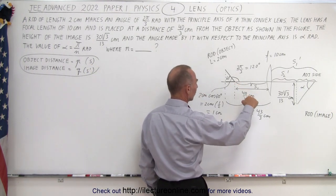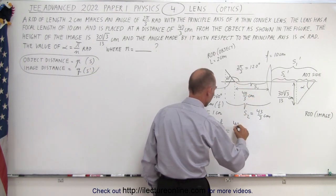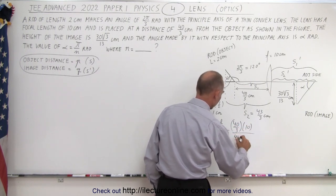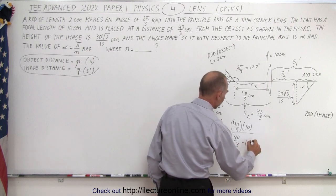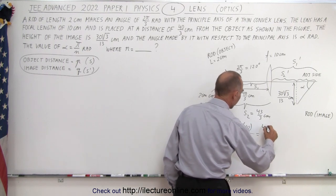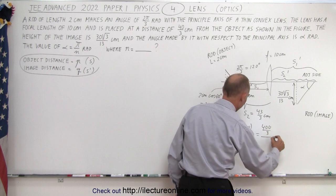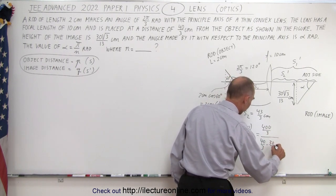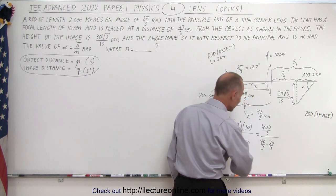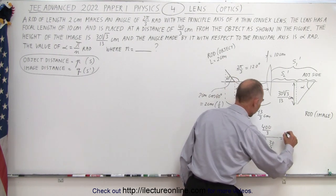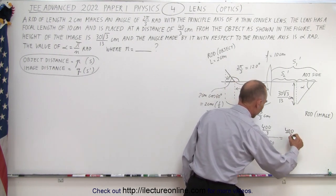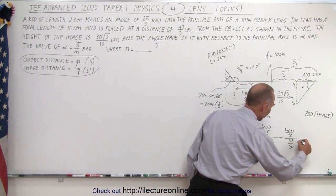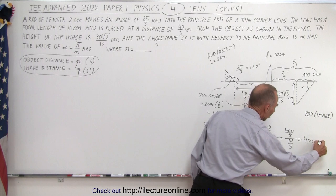Plugging in the numbers: s1 is 40 over 3 and the focal length is 10. So s1 prime = (40/3 × 10) / (40/3 − 10) = (400/3) / (40/3 − 30/3) = (400/3) / (10/3). The 3s cancel and we get s1 prime = 40 centimeters.